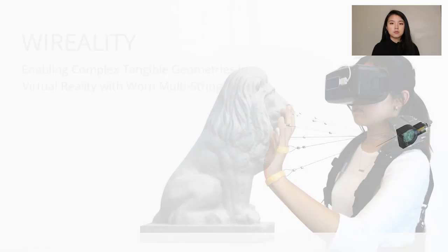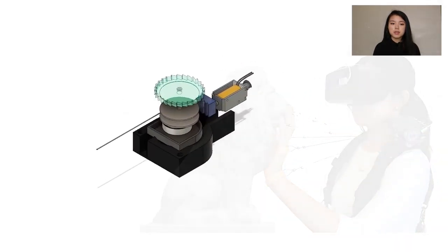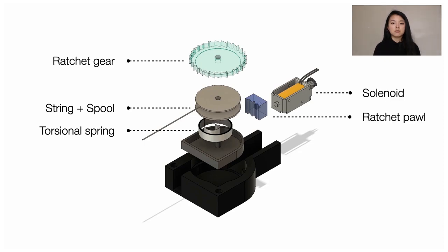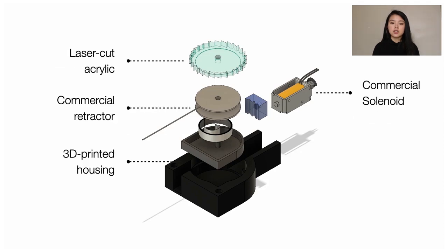The final design of a virality module is responsible for limiting one degree of freedom on the hand, which is comprised of spring-loaded cables that we can programmatically lock with a ratchet gear and a solenoid-driven pawl. We were able to achieve a low-cost design made out of laser-cut acrylic and 3D-printed housing, as well as commercial retractors and solenoids. Now, let's take a closer look at the design.